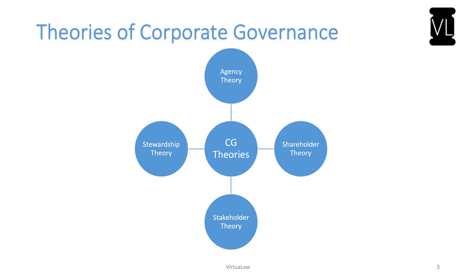Finally, the stewardship theory: as per the stewardship theory, the managers act as guardians to safeguard the resources of the corporation in the absence of its owners. They ensure they are acting as guardians just to make sure that the property or interest of the corporation is protected. Hence they are expected to manage the corporation as if it is their own property. As the name 'steward' suggests, you are basically taking up the role of being a protector to the properties of the corporation. These are the four theories predominantly accepted in corporate governance.